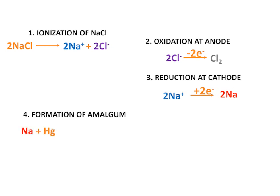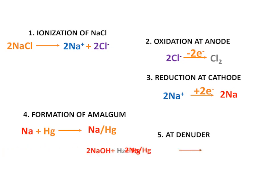This sodium metal mixes with the liquid mercuric cathode, resulting in amalgam. The amalgam flows to the denuder where it reacts with water forming sodium hydroxide and hydrogen gas.